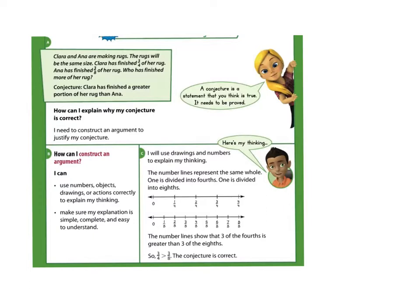So here's the thinking: how can I construct an argument? Use this as a resource when you are making a conjecture. I can use numbers, objects, drawings, or actions correctly to explain my thinking. This is a way to show how you got your answer. Make sure my explanation is simple, complete, and easy to understand. I will use drawings and numbers to explain my thinking.